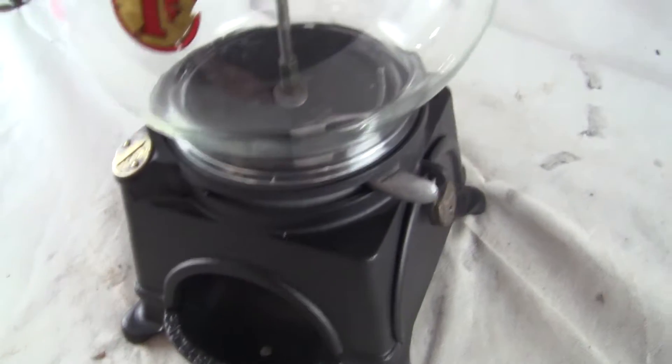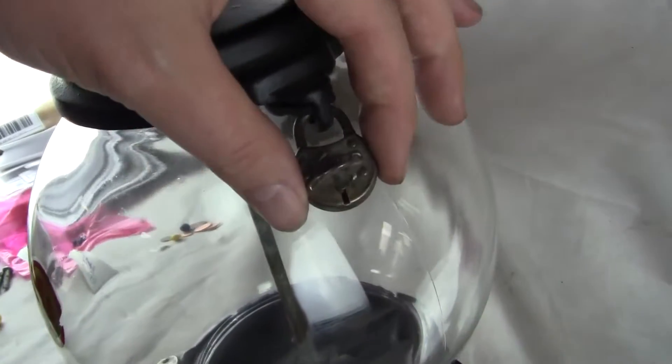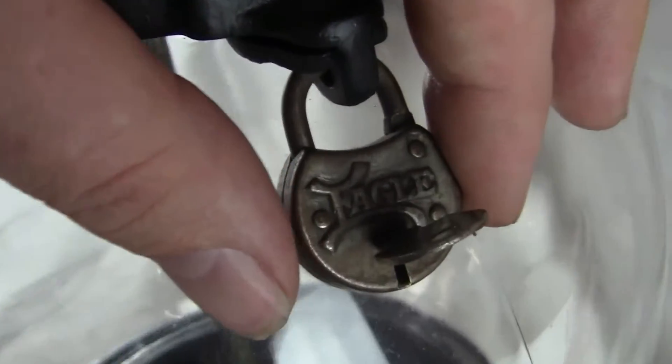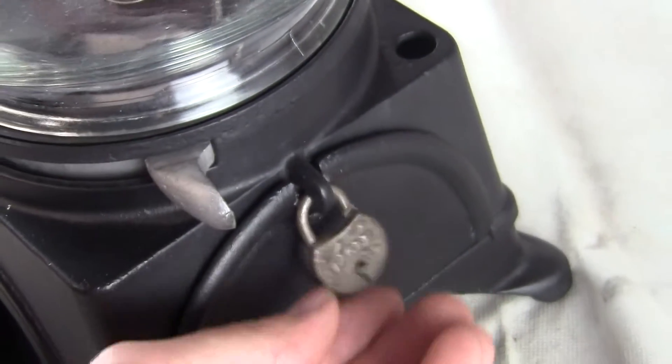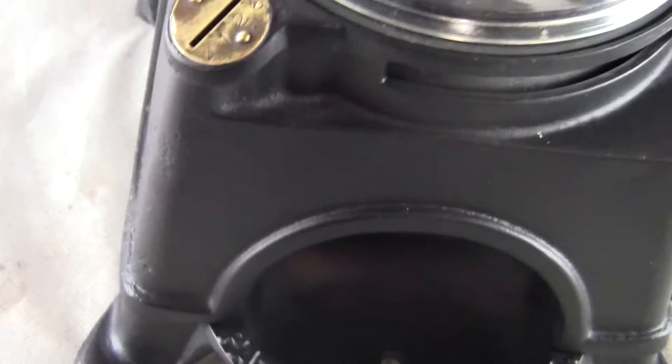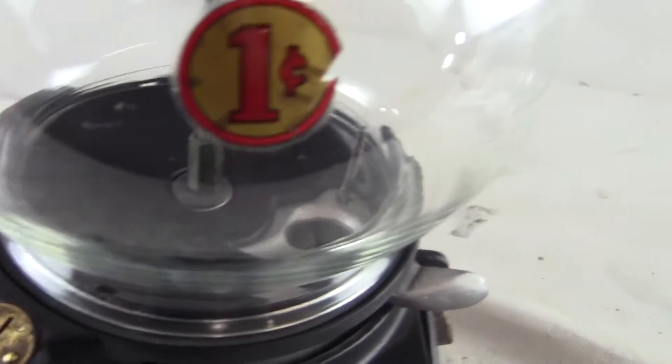It should be gum. It comes with a pair of original tiny eagle locks. These are the rare ones, the hard to find eagle locks. They're keyed alike and everything on this machine is original and cast iron.